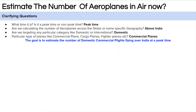The second question we can ask is about geography — are we thinking about airplanes flying across the globe or above a particular geography? Let's assume the interviewer wants us to calculate airplanes flying over India. The final question is about categories: are we calculating passenger planes or cargo planes, and do we include domestic flights only or international flights as well? These are very important questions to clarify before jumping into the solution. Let's assume the interviewer wants us to calculate only domestic passenger flights.